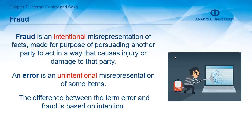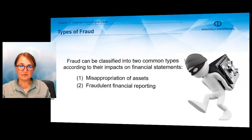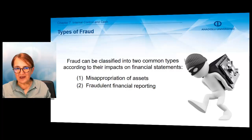The internal control system tries to eliminate all errors and frauds. By establishing the internal control system — including control environment, accounting information system, and documentation — a lot of things can be managed. There can be two types of fraud classified by their impact on financial statements: misappropriation of assets and fraudulent financial reporting.